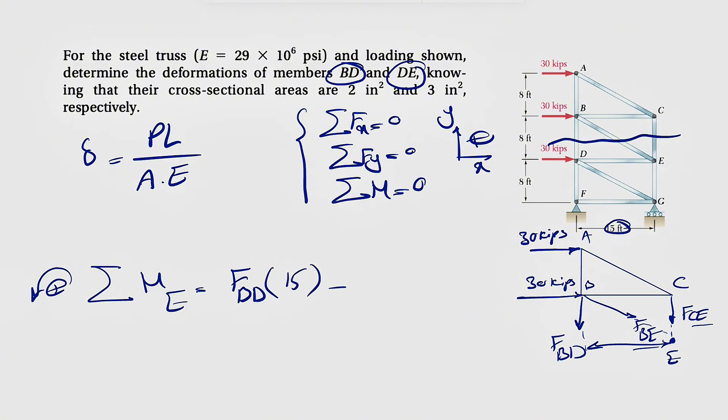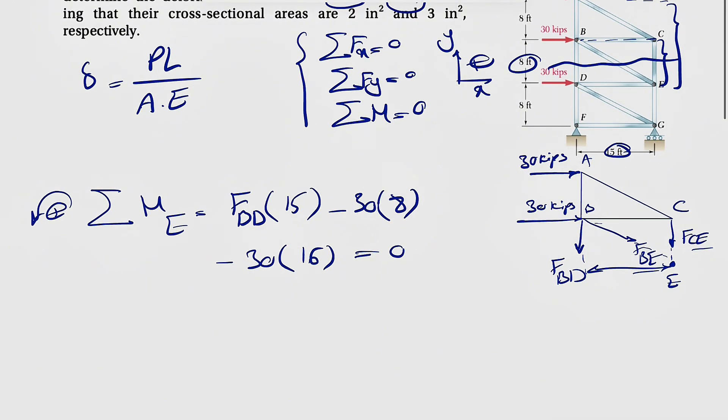And we're going to have the moment of the 30 kips that is applying at point B. This is going to be clockwise, so negative 30 times the vertical distance from E to the line of action of the 30, which is 8. And also we're going to have another 30 kips at point A. This one's also clockwise moment, so negative again, and vertical distance to the line of action. We're looking for this distance, which is 8 plus 8 or 16. This will be equal to 0 and should be able to find FBD.